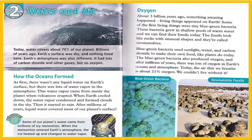Some of our planet's water came from millions of icy meteorites. When the meteorites entered Earth's atmosphere, the ice heated up and changed to water vapor.